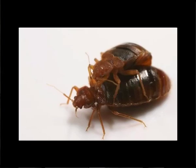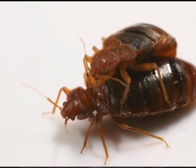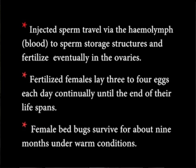Traumatic insemination: All bed bugs mate by traumatic insemination, where the male pierces the female abdomen with its hypodermic genitalia and ejaculates sperm into the body cavity. In all bed bug species except Primicimex cavernis, sperm are injected into the mesospermalege, a component of the spermalege — a secondary genitalia structure that reduces the wounding and immunological costs of traumatic insemination. Injected sperm travel via the hemolymph (blood) to sperm storage structures and eventually fertilize the ovaries. Fertilized females lay 3 to 4 eggs each day continuously until the end of their lifespans. Female bed bugs survive for about 9 months under warm conditions.